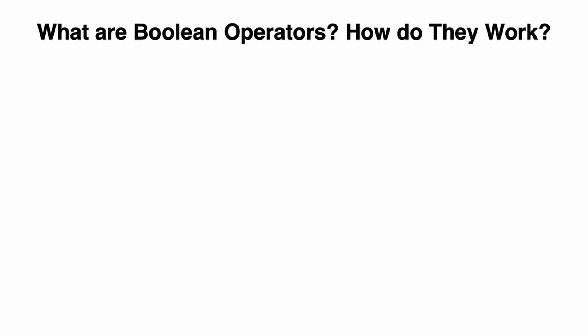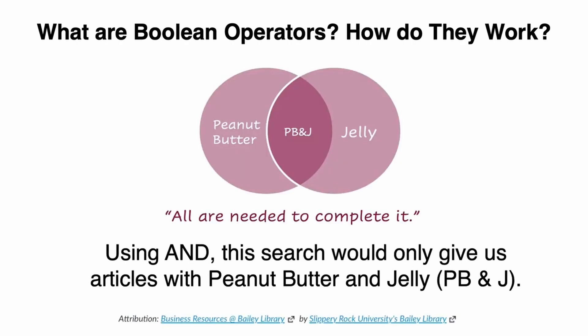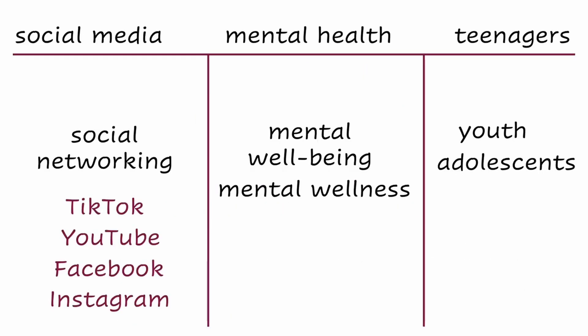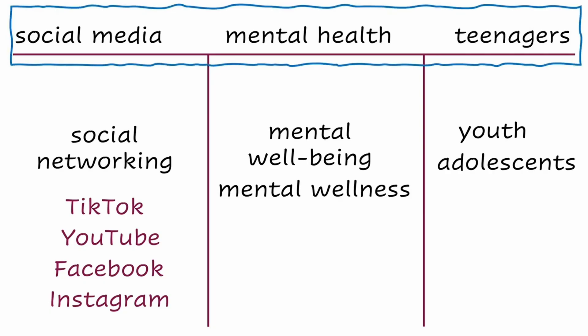The two most common basic operators are AND and OR. Using AND to connect keywords in a search statement tells the database you only want to see articles that contain all of those keywords — think 'all are needed to complete it.' Using OR to connect keywords tells the database you want to see any articles that have either of those keywords — think 'either one and the job is done.' Looking at the keyword brainstorm table for our research question, we would want only research that contains all of the keywords across the top, so we can combine those keywords with the Boolean operator AND.